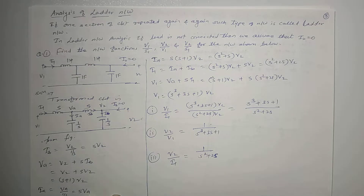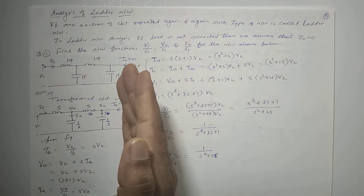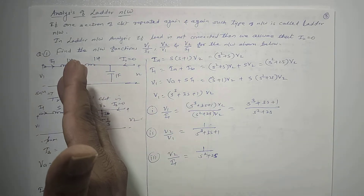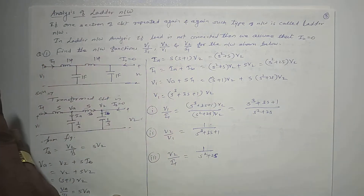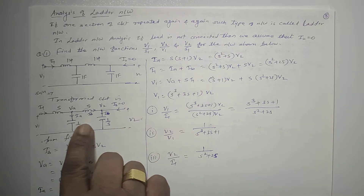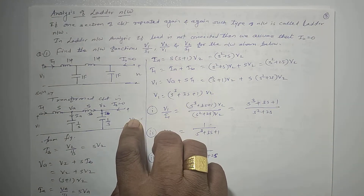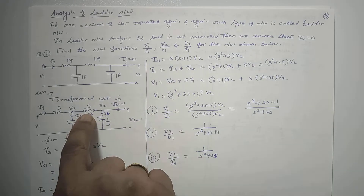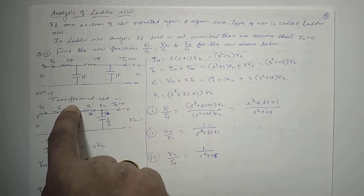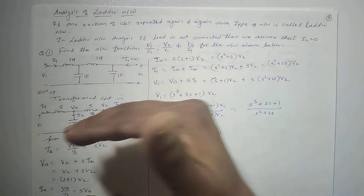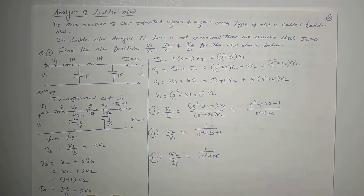In ladder analysis, you have to start from the right side. Node voltage, branch current — proceed right to left. All variables — V2, IB, IA, VA, I1, V1 — you have to obtain in terms of V2. Proceed right to left.